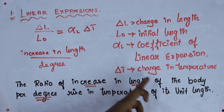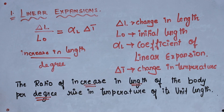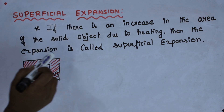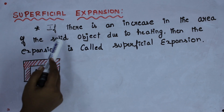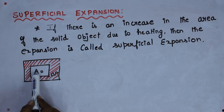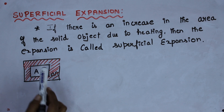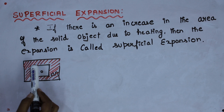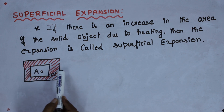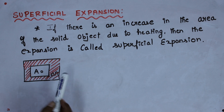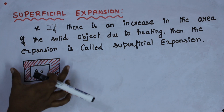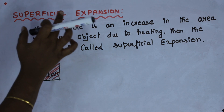Delta T is the change in temperature. Now we are going to see the next type: superficial expansion. If there is an increase in the area of the solid — considering one solid object, before applying temperature the area of the solid is A₀, and after heating the area of the solid increases — that change I am considering as delta A. If the area expands because of heating, such expansion is called superficial expansion.